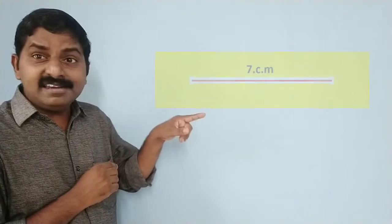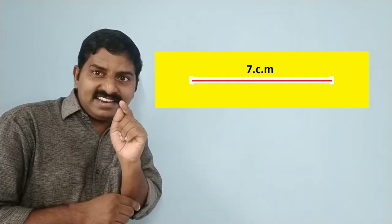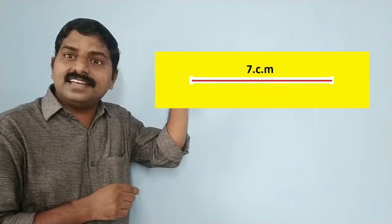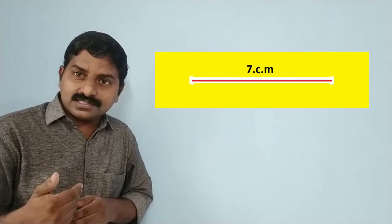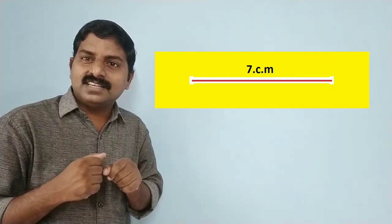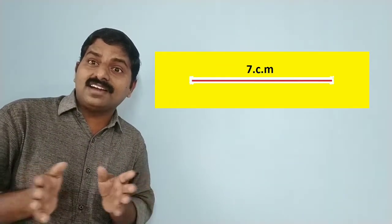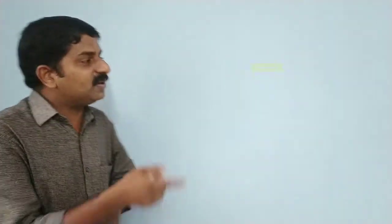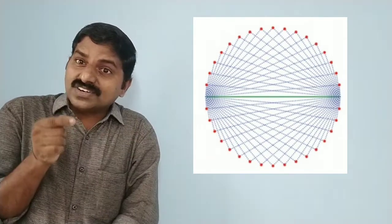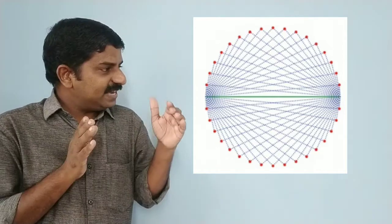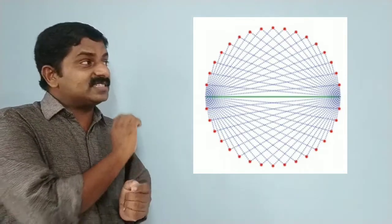Just take a line. Then at the first end use 1 degree, at the second end 89 degrees; then 2 degrees and 88 degrees; 3 degrees and 87 degrees. If you take this type of angles at the ends of this line, the figure becomes like this. In that figure, our first line AB is the diameter of a semicircle.